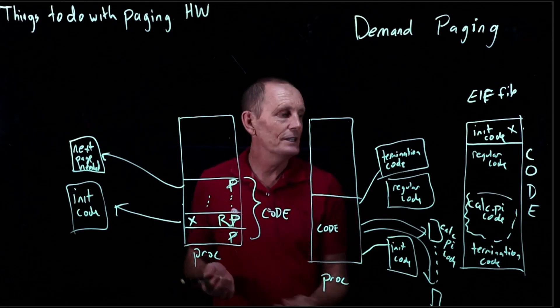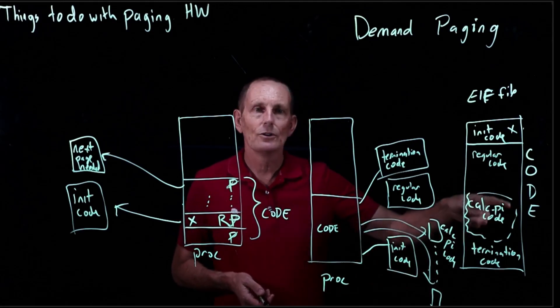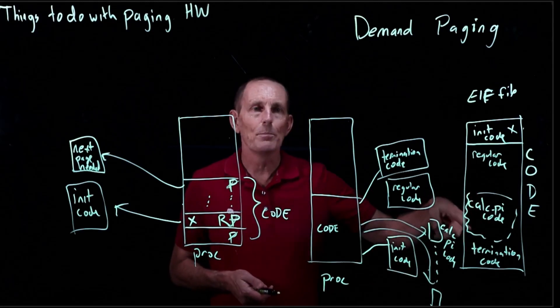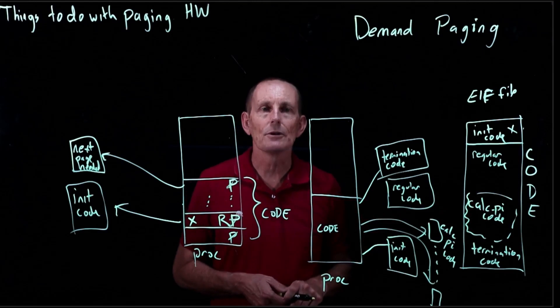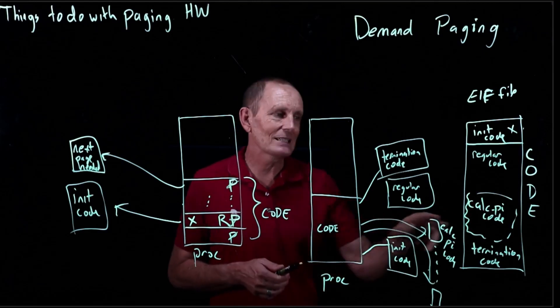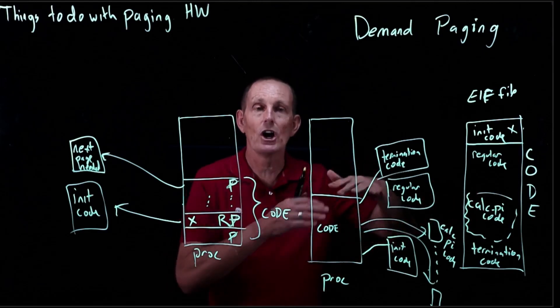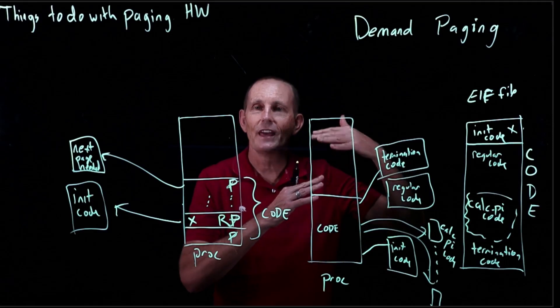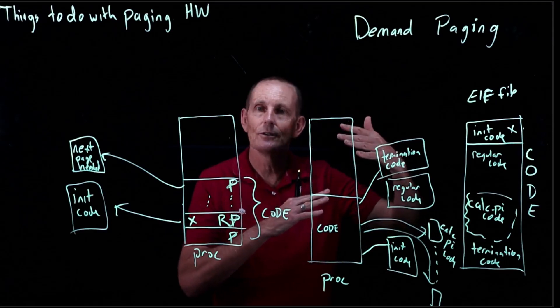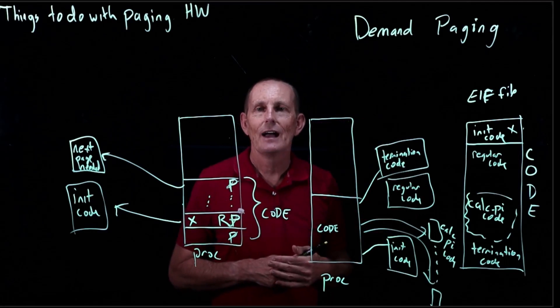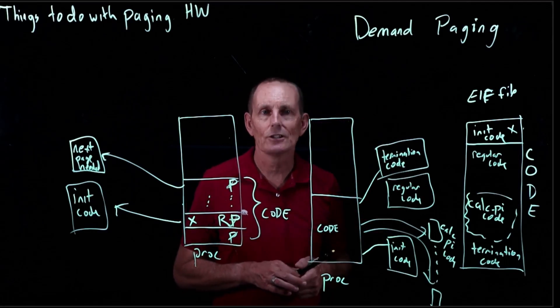So if this particular run of the procedure didn't need this code, the pages for that code wouldn't be loaded. It's possible some of the code might be loaded because it's on a page that has code that was executed. But if there are any pages which have no instructions that were executed, those pages won't get loaded.